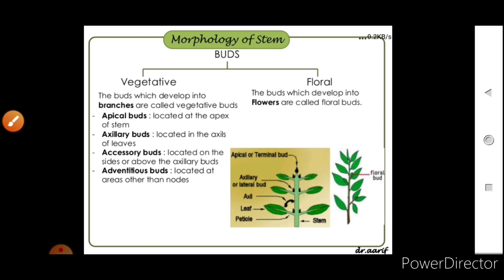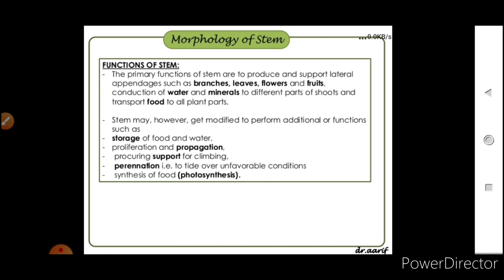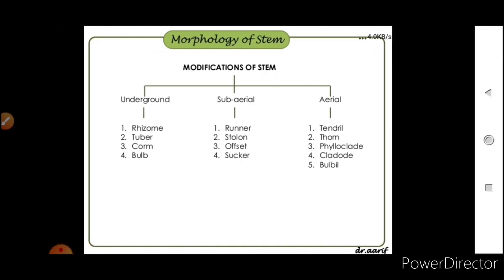The primary functions of the stem are to produce and support lateral appendages such as branches, leaves, flowers, and fruits; conduction of water and minerals; and transport of food to all parts. Stem may also get modified to perform additional functions such as storage of food and water, vegetative propagation, providing support for climbing, perennation during unfavorable conditions, and photosynthesis. Modifications of stem can be underground, sub-aerial, and aerial.